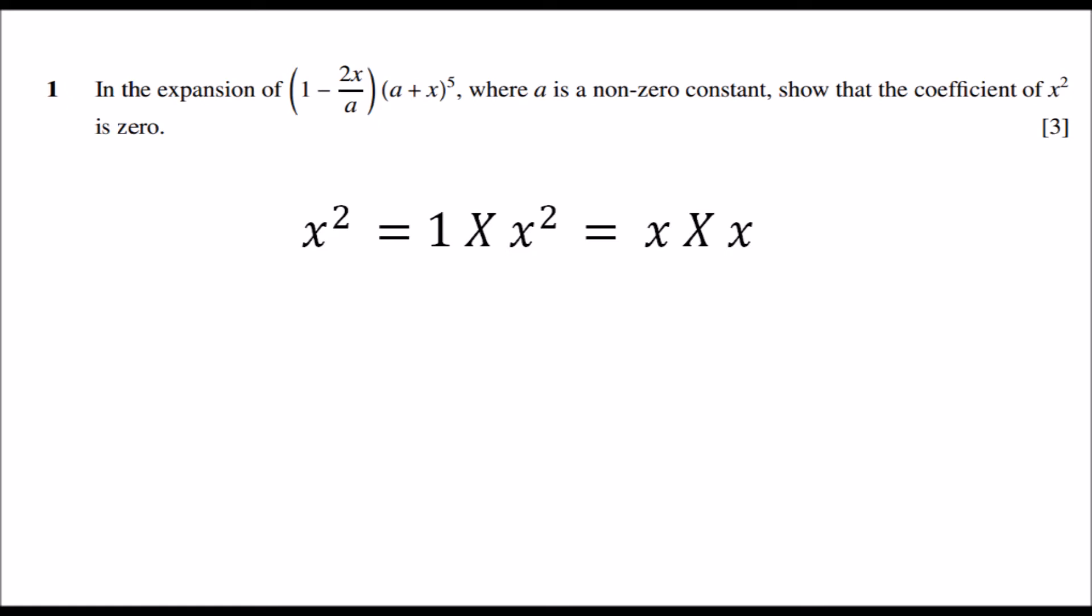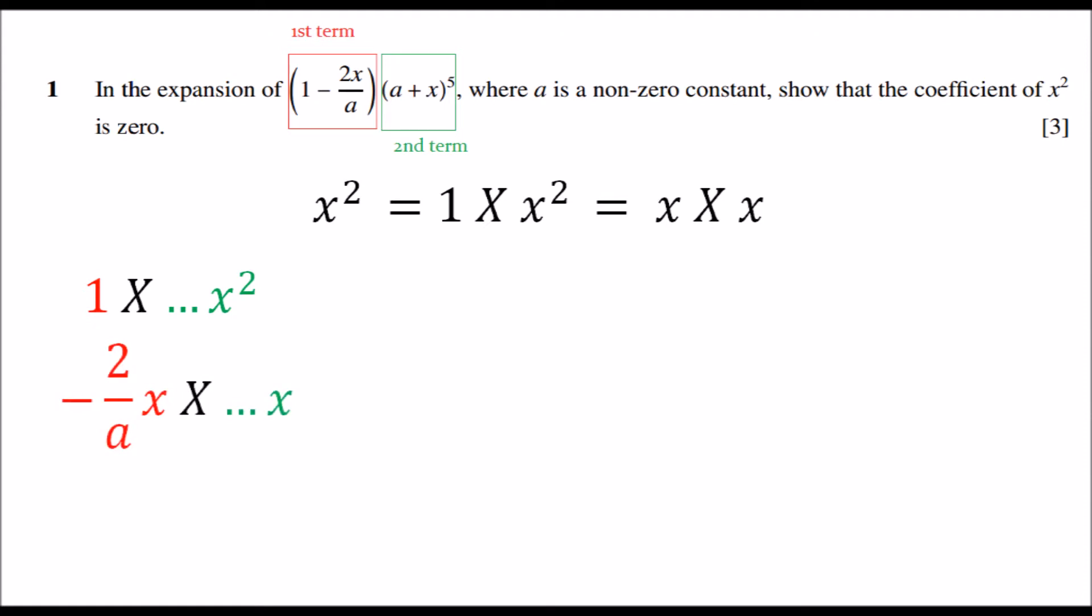To make it clearer and simpler, I have marked the first term in red and the second term in green. Taking one from the first term and taking the term in x squared from the expansion of the second term and multiplying these two we get x squared. Similarly, taking the term negative 2x over a from the first term and taking the term in x from the second term and multiplying these two we also get x squared. Now it's clear that to begin we need to expand the second term.